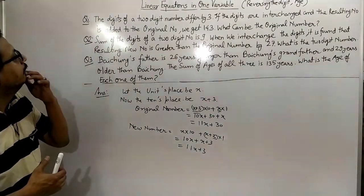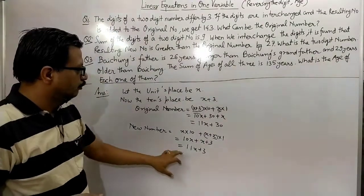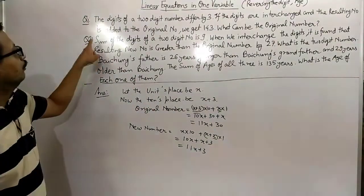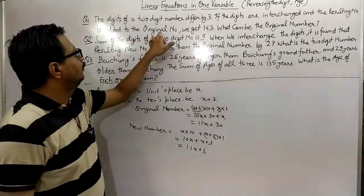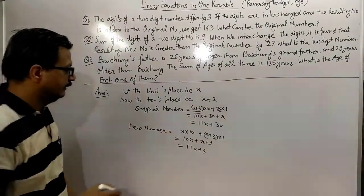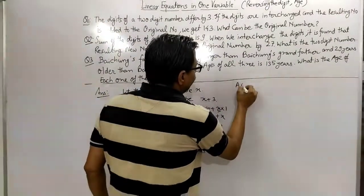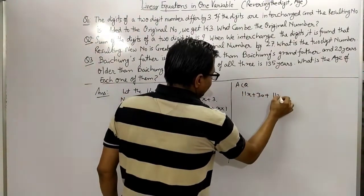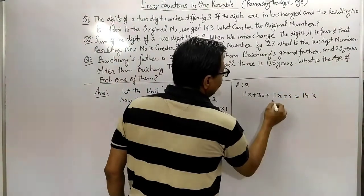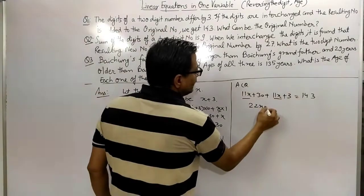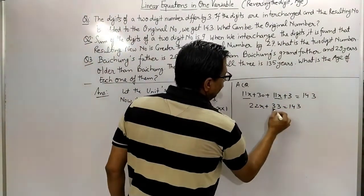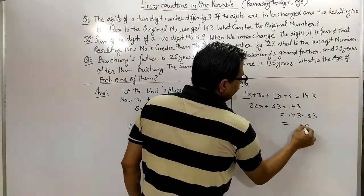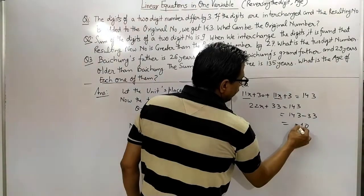The original number is 11x + 30 and the new number is 11x + 3. Now, as per the question, the resulting number is added to the original number and we get 143. So the equation is: (11x + 30) + (11x + 3) = 143, which gives 22x + 33 = 143. Subtracting 33 from both sides: 22x = 110.